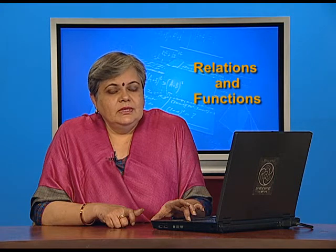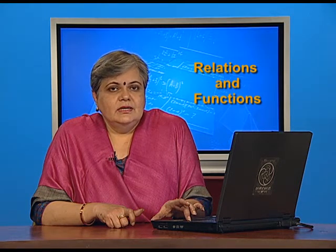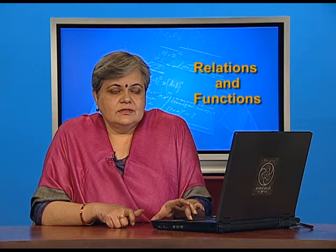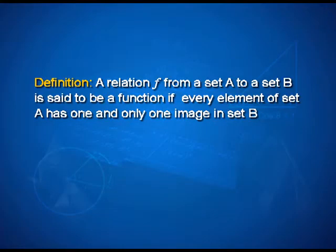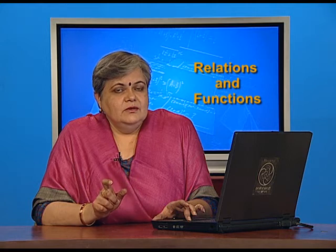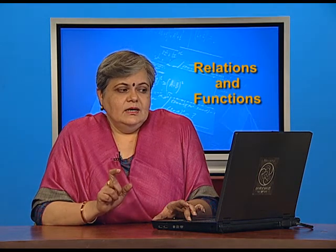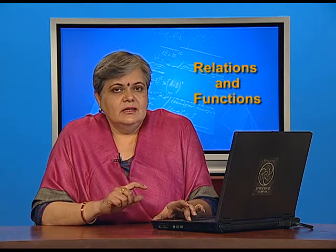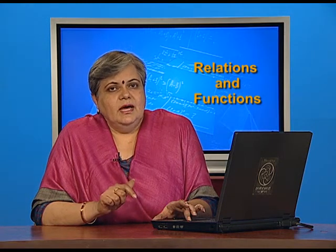And so, what do we mean and how do we define what a function is from set A to set B? Here is the definition: A relation F from a set A to a set B is said to be a function if every element of set A has one and only one image in set B. Now, the words that are highlighted here are every. So, every element of set A must be connected, must be mapped to one and only one image in set B. It cannot be associated with more than one element of set B. With these two conditions satisfied, the relation becomes, qualifies to be termed as a function.